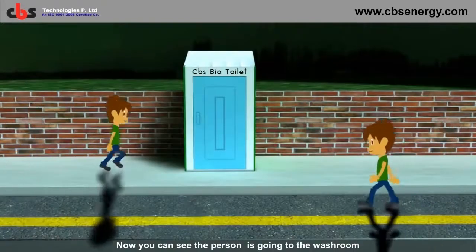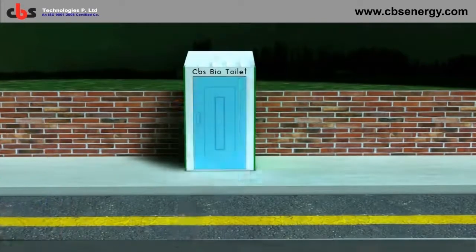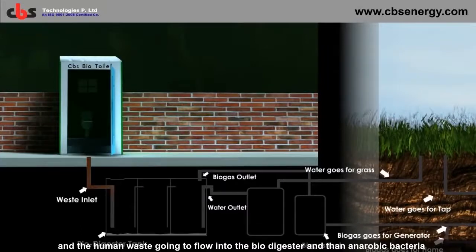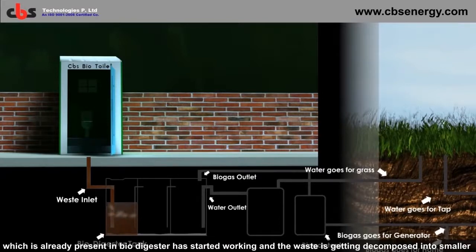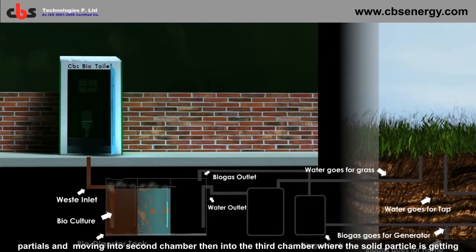You can see the person is going to the washroom and the human waste is going to flow into the biodigester. Anaerobic bacteria, which is already present in the biodigester, has started working and the waste is getting decomposed into smaller particles and moving into the second chamber.